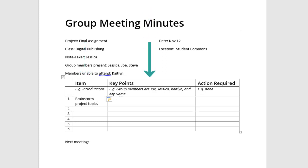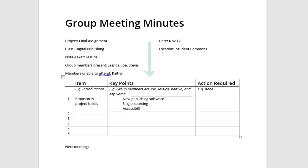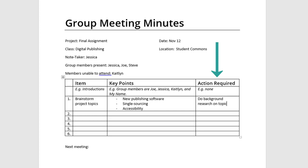Now add the key points that were discussed during this part of the meeting. For example, I'll write some of the topics that were proposed. The final column is where you'll write down anything that needs to be done for this item. For example, do background research on topic options. This will help group members see at a glance if they are supposed to be doing something specific.